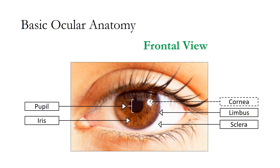This frontal view of the eye identifies the following anatomical structures. The iris is the pigmented tissue lying behind the cornea that gives color to the eye and creates an opening called the pupil. The pupil is a black variable-sized opening located at the center of the iris that regulates the amount of light entering the eye. The cornea is a specialized thin, transparent tissue that covers the iris, pupil, and lens and helps enclose the eye. The sclera is the white portion of the eye and the limbus is the junction between the cornea and sclera.